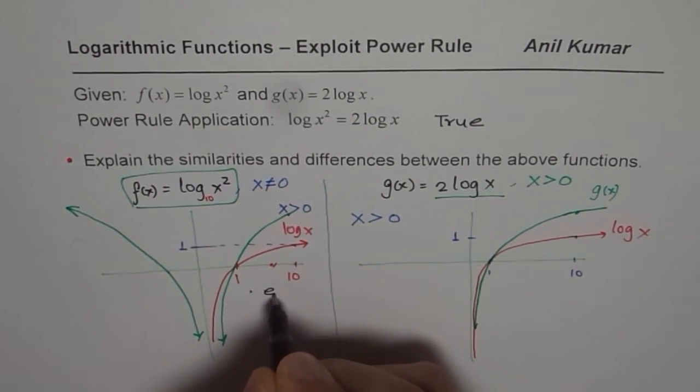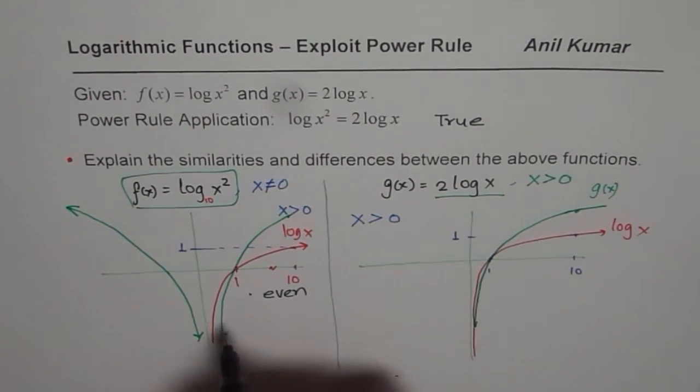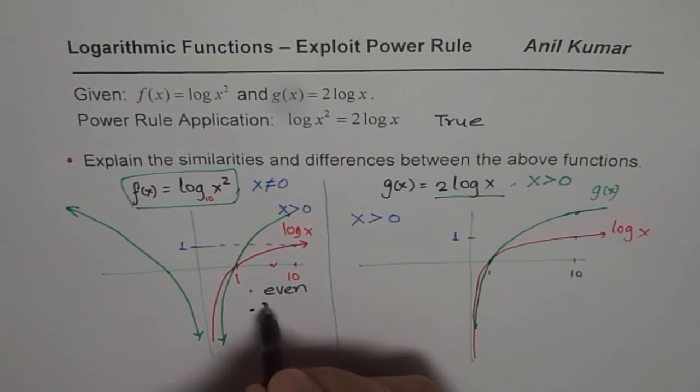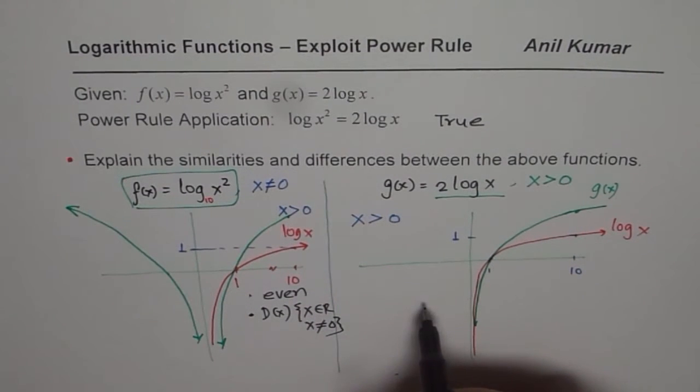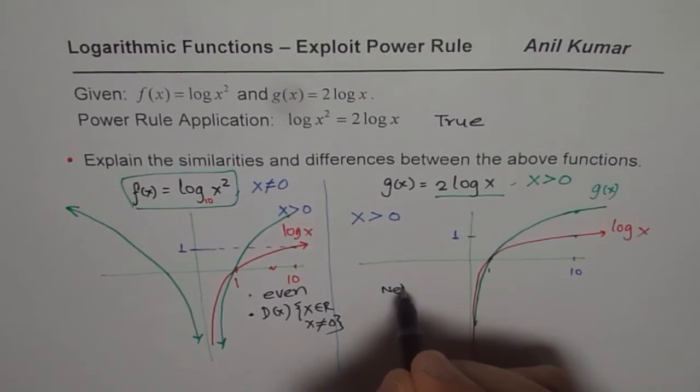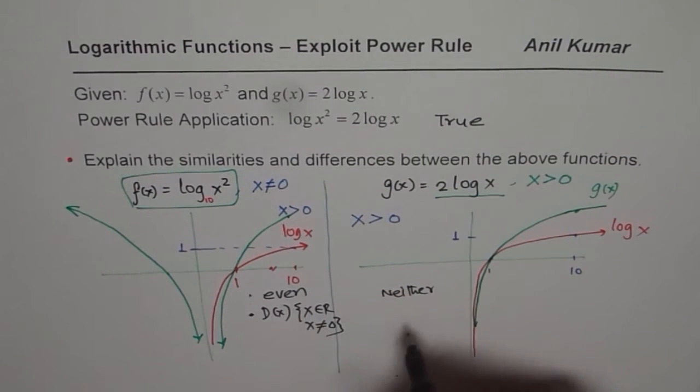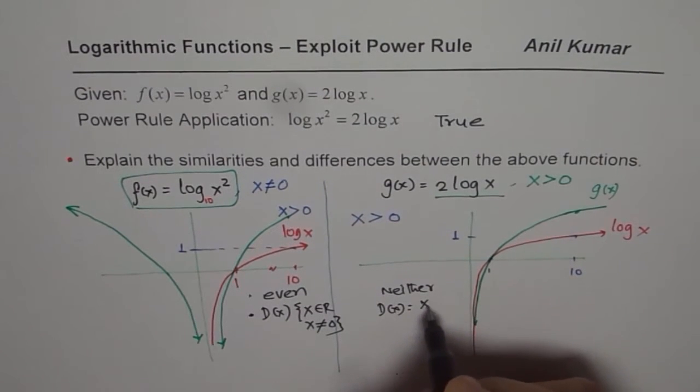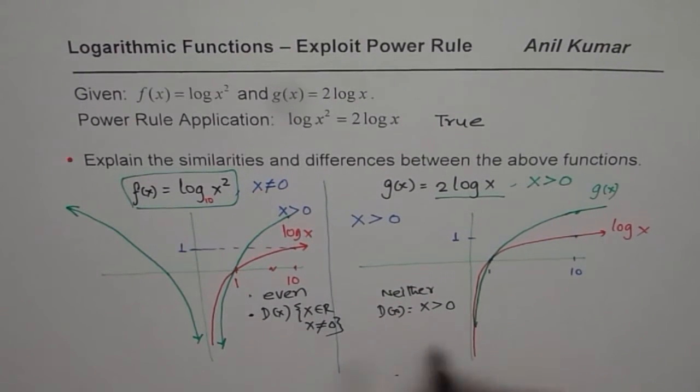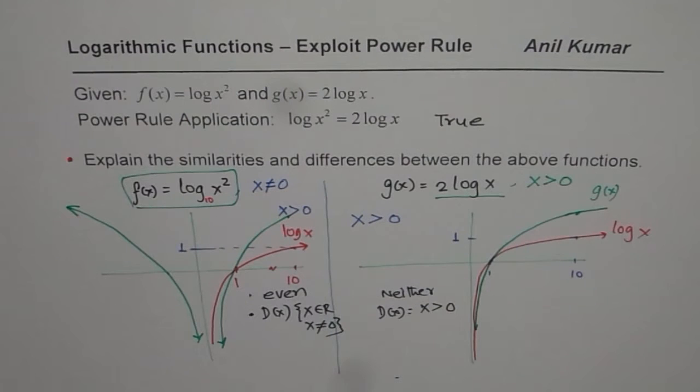This one is an even function. So we have a lot of properties here. So here log of x squared, it is even, right? This one is not even. And here the domain is just x belongs to real numbers and x not equal to 0. And this function is neither. You can see. And the domain in this case is x greater than 0. So there is a lot of difference between these two functions.